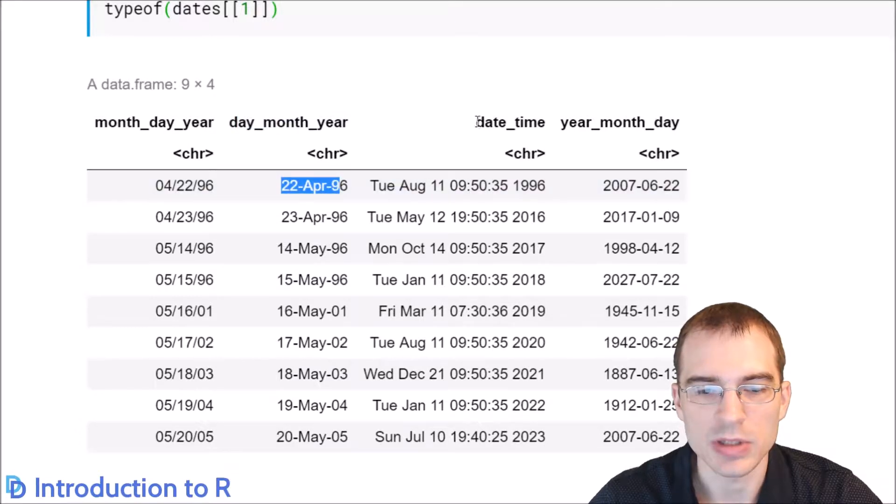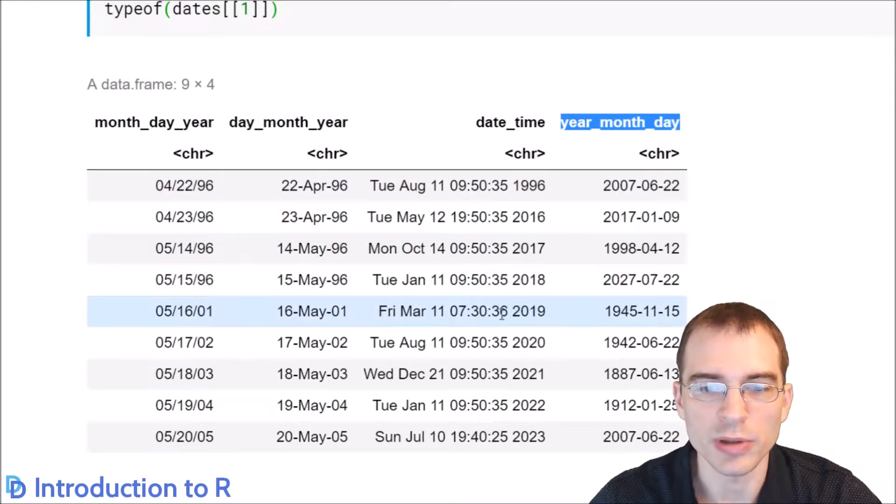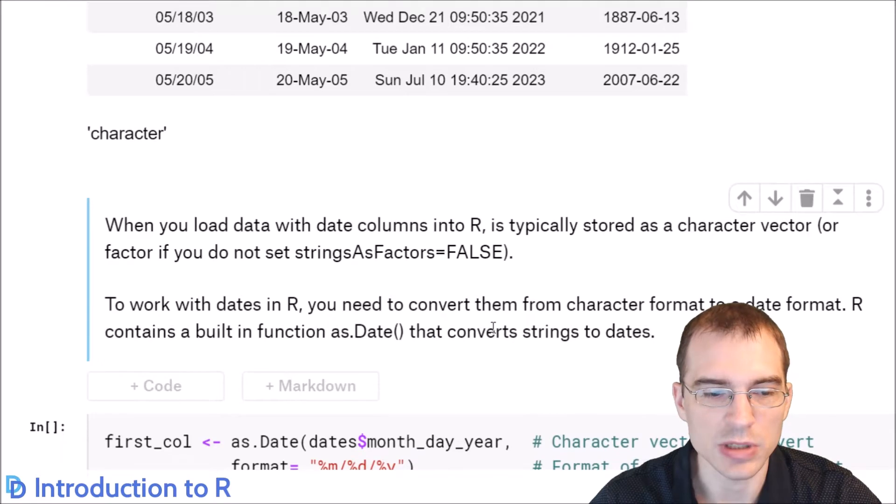This one is day, month, year. This one is a full date time, so it includes both a date and a time signature. And the last one is in year, month, day format. This will give us data that we can work with using different date time related functions for this lesson.